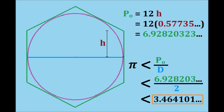So it is that our upper bound is approximately equal to 3.464. That makes sense, because this value should be greater than the actual value of pi, about 3.14.